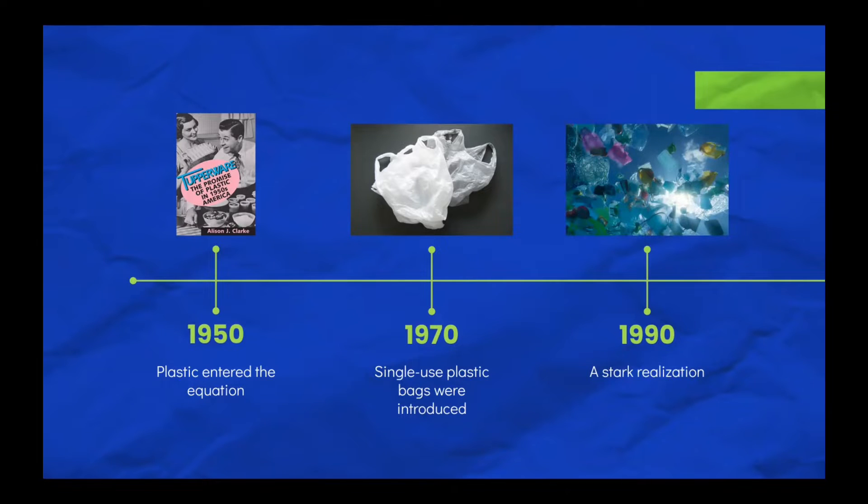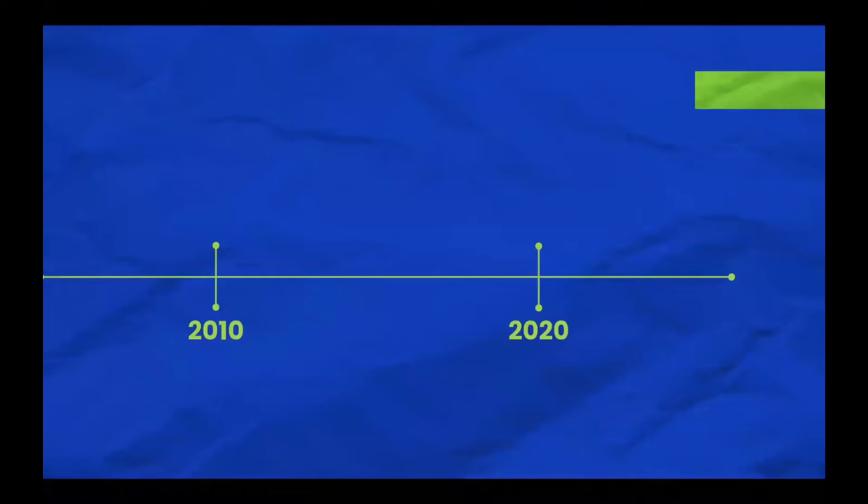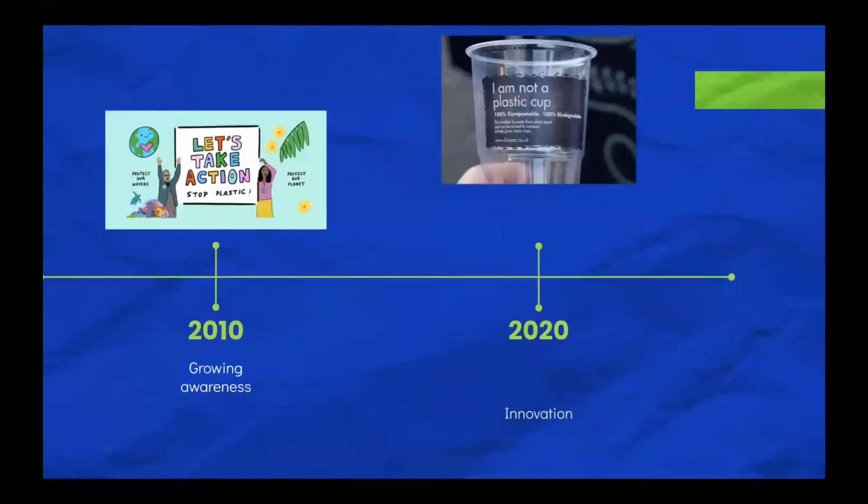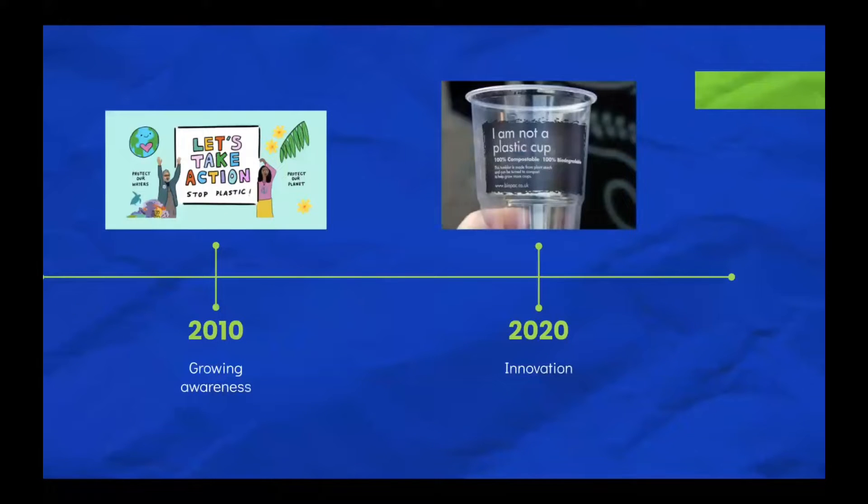By 2010, people were more aware of the negative effects of plastic on our environment, and we began to see efforts in mitigating the issue of plastic pollution. By 2020 and beyond, we have started getting somewhere with innovations for alternatives to plastic.